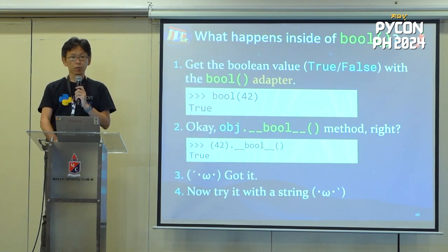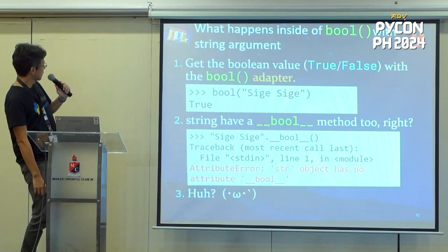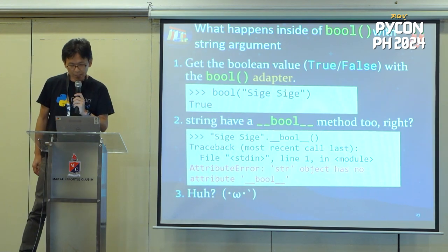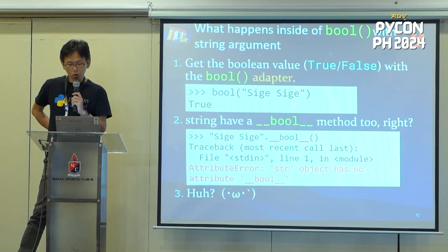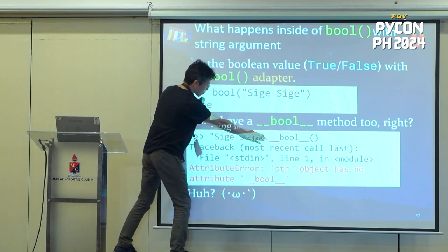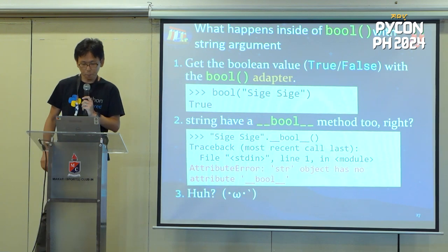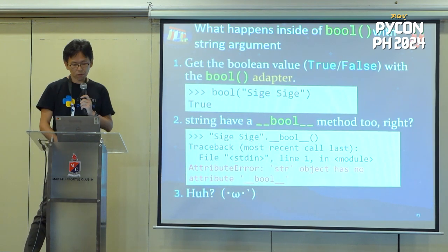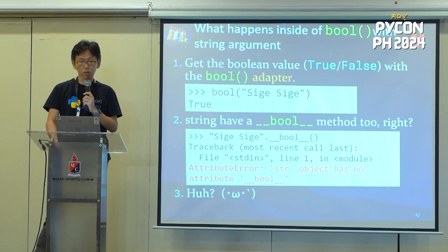With strings, it raises an AttributeError. If you call `string.__bool__` method, it raises an AttributeError. What happens? Let's check the specification of the bool function in the documentation.